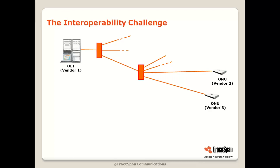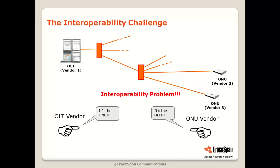Another subject closely related to OMCI is interoperability — specifically interoperability between OLTs and ONUs from different vendors. When you connect them and something doesn't work, vendors often point fingers at each other, each claiming the other is at fault, since each may be behaving correctly but not in the way the other end expects. Very often, what is not behaving correctly is the OMCI.